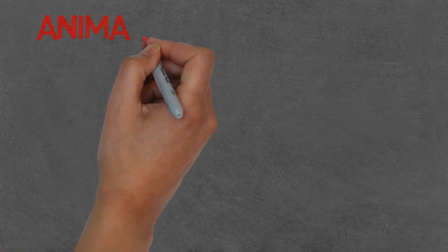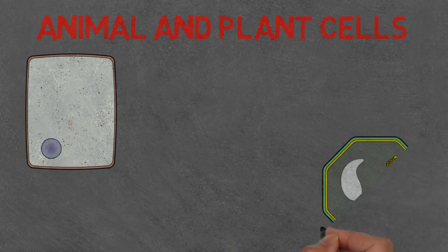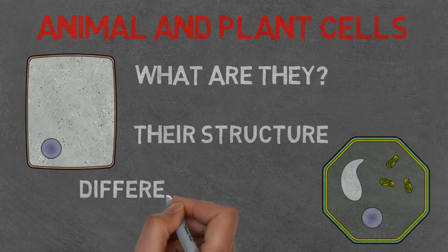Today we are going to look at plant and animal cells. More specifically, what are plant and animal cells, what is their structure, and how do we differentiate between plant and animal cells?